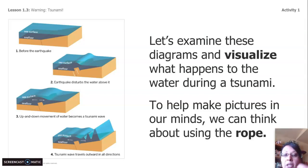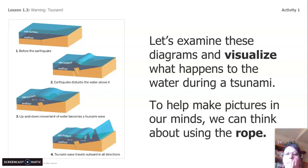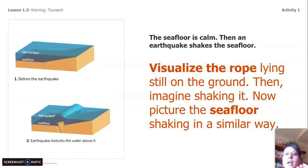As we look at these pictures, think about the rope we used just yesterday. Before an earthquake happens, everything is calm — the seafloor is fine and the water above it is just being normal. Then an earthquake disturbs the water above it; the seafloor is calm and then all of a sudden — boom — an earthquake happens and the seafloor is jolted. The up and down movement of water becomes a tsunami, and the tsunami water travels outward in all directions. Think of the rope: I have the rope, jolt, jolt, and then the wave is going up and down.